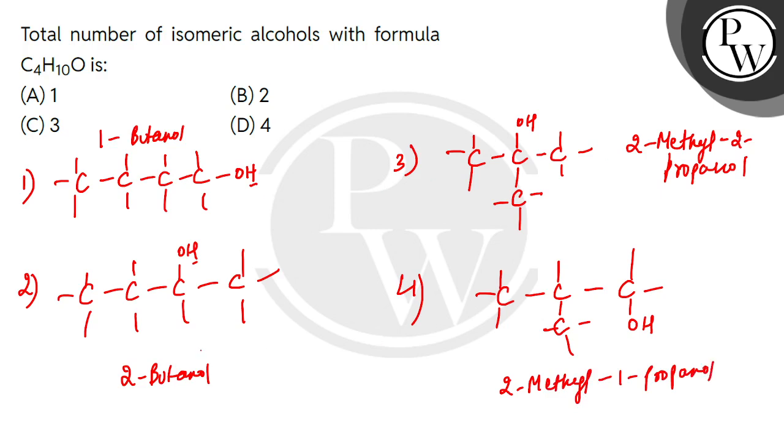So these are the 4 possibilities. You can draw 4 types of isomeric alcohols, so the D option is correct. The rest of the options will be incorrect. I hope you understood this question very well. Thank you.